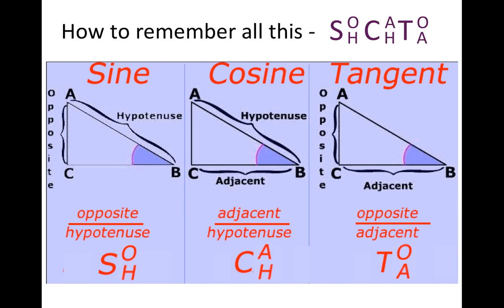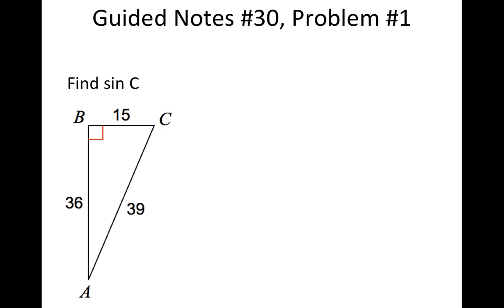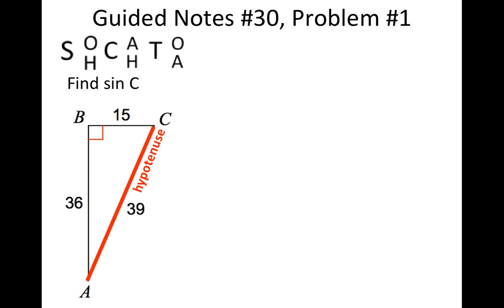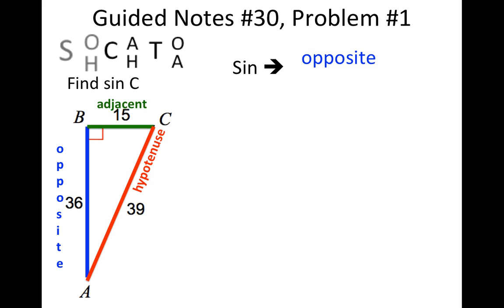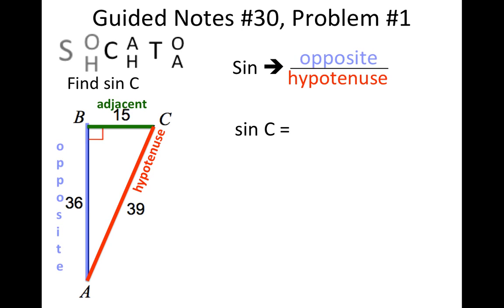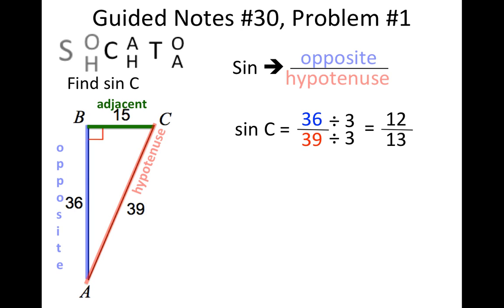How are we actually going to use this? We have two problems to go through. The first asks us to find the sine of C. For sine, I put on my sides — hypotenuse, opposite, and adjacent to angle C. I'm finding sine, so I use the SOH part of SOHCAHTOA: opposite over hypotenuse. The sine of C is the opposite, which is 36, over the hypotenuse, which is 39. Reducing by dividing by 3, the sine of angle C equals 12 thirteenths.